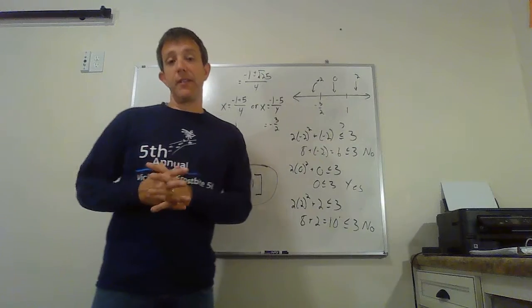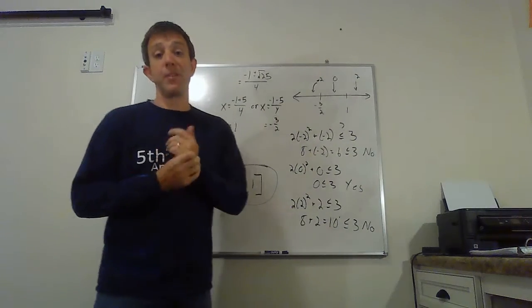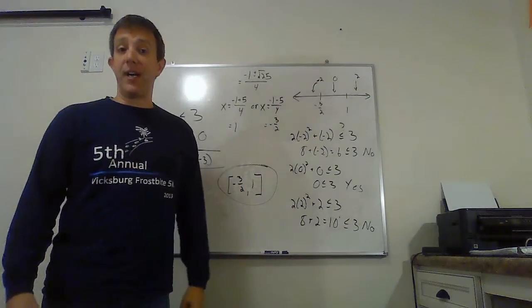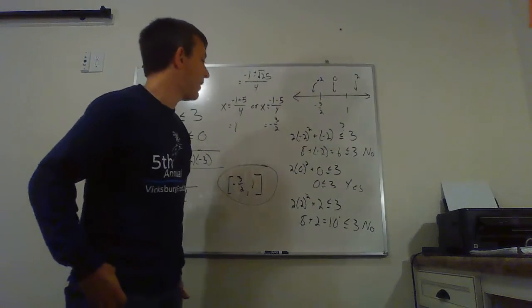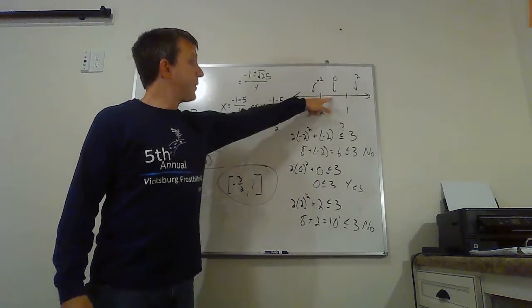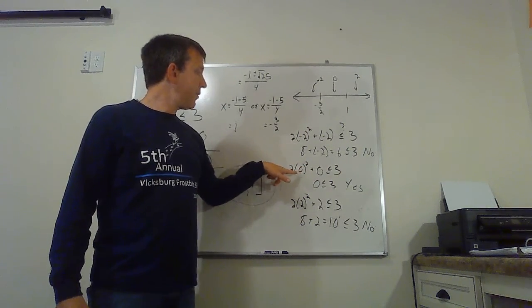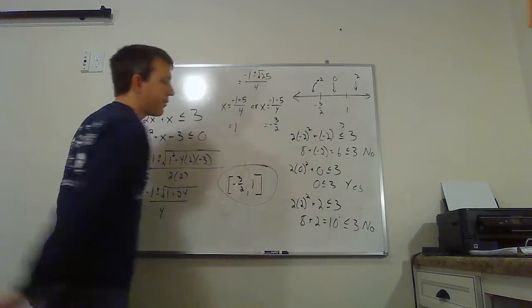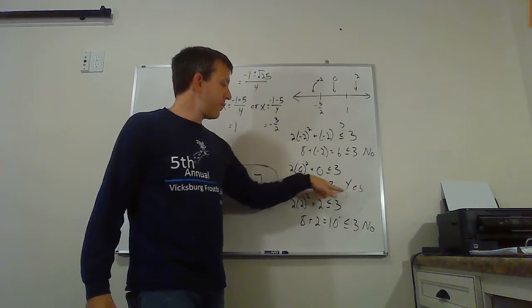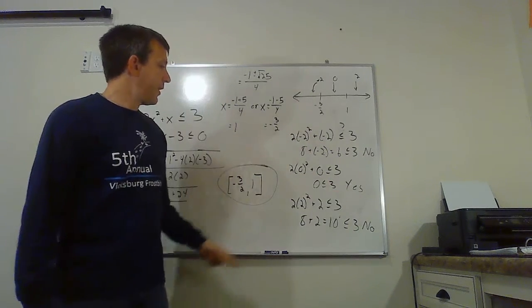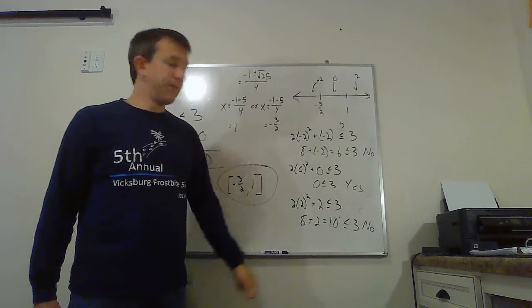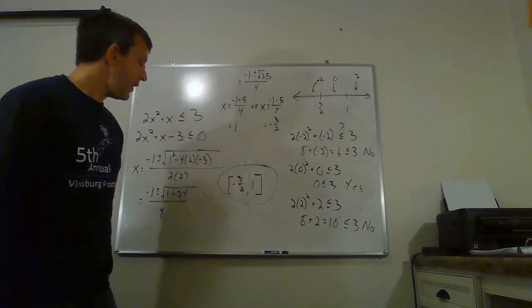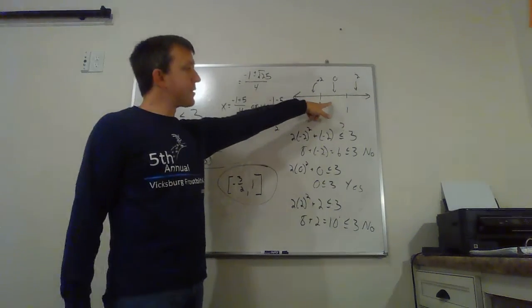From what we just said with the last example, it seems likely that since this one doesn't work, the middle one does. But I'm going to check it just because I don't like being wrong. So I'm going to take that zero and plug it in. If I plug in zero, two times zero squared plus zero less than or equal to three, that actually works because you get zero is less than or equal to three. So that's a yes. That interval is good. And then if you plug in the two, it fails again, you end up with 10, which is definitely not less than or equal to three.